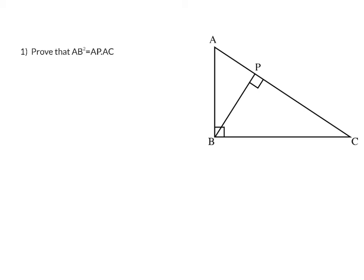Our first step will be to prove that AB squared is equal to AP times AC. For this, we are going to prove that triangle ABC is similar to triangle ABP.